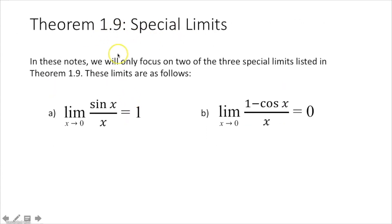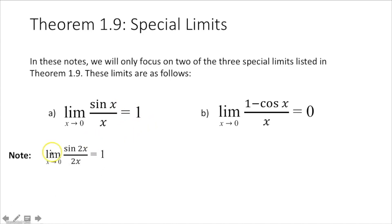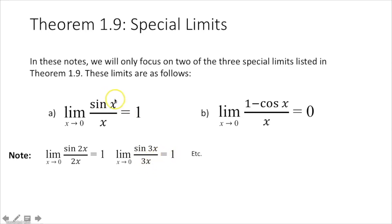Theorem 1.9, special limits. The limit as x approaches 0 of sine of x over x equals 1, and the limit as x approaches 0 of 1 minus cosine of x over x equals 0. Know these two limits — they are special limits. Also note that the limit as x approaches 0 of sine of 2x over 2x equals 1, and sine of 3x over 3x equals 1. As long as whatever is in the numerator matches the denominator, your limit as x approaches 0 is going to equal 1.